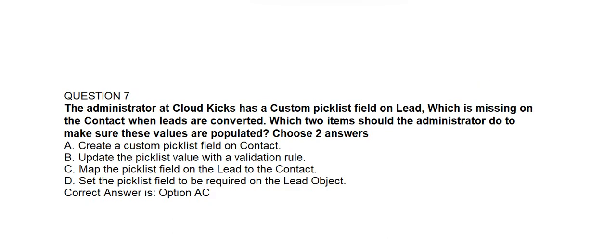Question number 7. The administrator at Cloud Kicks has a custom picklist field on lead which is missing on the contact when leads are converted. Which two items should the administrator do to make sure these values are populated? Option A: Create a custom picklist field on contact. Option B: Update the picklist value with a validation rule. Option C: Map the picklist field on the lead to the contact. Option D: Set the picklist field to be required on the lead object. Correct answer is Option A and Option C: Create a custom picklist field on the contact, and map the picklist field on the lead to the contact.